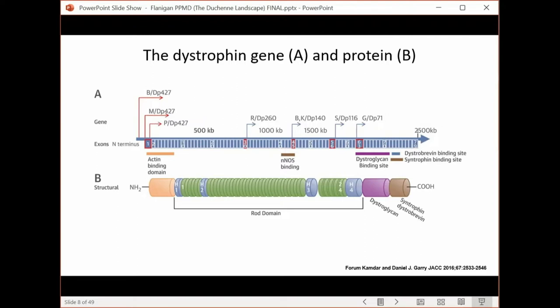That muscle isoform encodes the protein, which has at the N-terminus an actin binding domain that binds to filamentous actin in muscle, a large central rod domain, and a C-terminal domain that binds to dystroglycan. And we use these terms regularly: N-terminus, rod domain, and C-terminus.